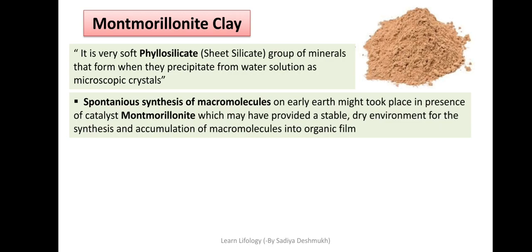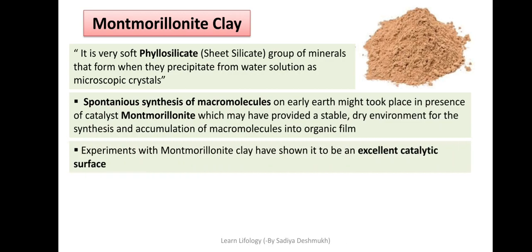The spontaneous synthesis of macromolecules on early Earth might have taken place in the presence of Montmorillonite as a catalyst. It may have provided a stable dry environment for the synthesis and accumulation of micro molecules into organic films. Experiments with Montmorillonite clay have shown it to be an excellent catalytic surface, and later these macromolecules got converted into simple cells.